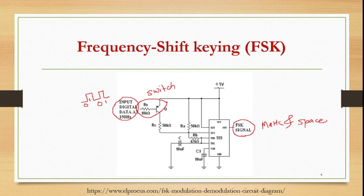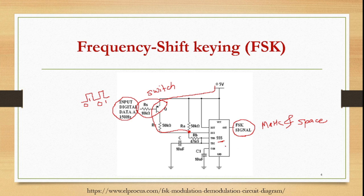The transistor is connected between plus 5 volts and this point. This is IC 555 used in astable mode, where it generates frequencies. The transistor's switching action makes the circuit operate at different frequencies. You can see here: this is RA, this is RB, and this is capacitor C.